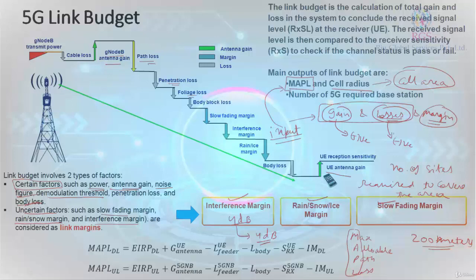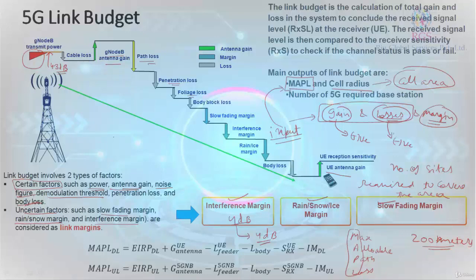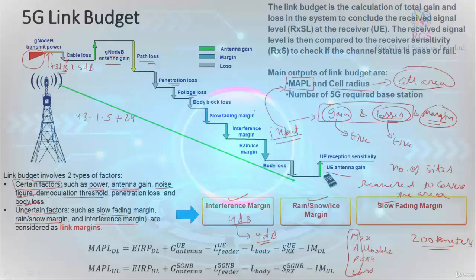Let's see with an example. We start with the gNB, which has a power of 43 dBm. Then we encounter a cable loss of 1.5 dB, which is subtracted, giving 43 minus 1.5. Then we have an antenna gain of 24 dB added, followed by path loss, penetration loss, foliage loss, body loss, shadow fading margin, slow fading margin, interference margin, and rain margin — all negative. Adding all these together gives us the MAPL for downlink.